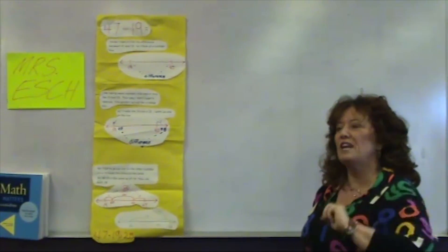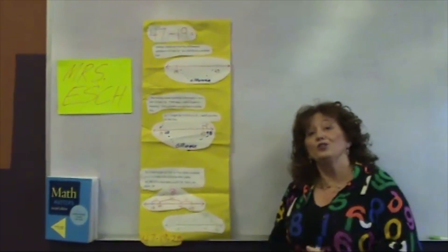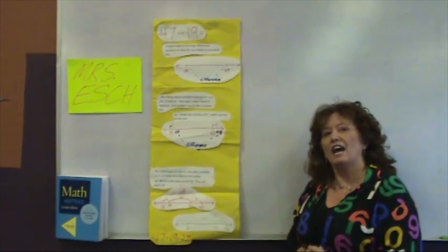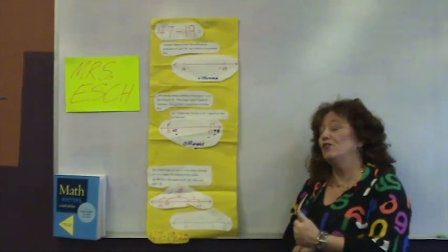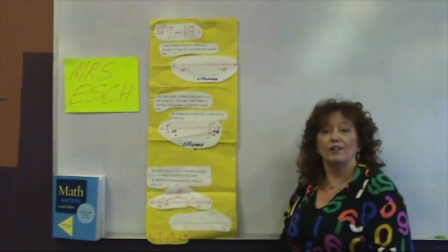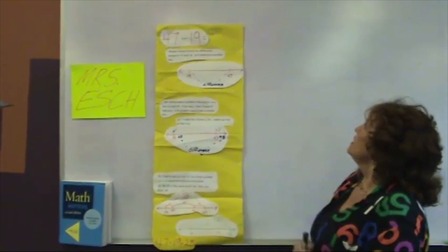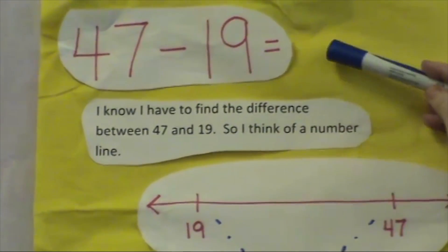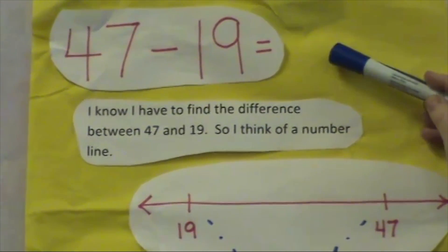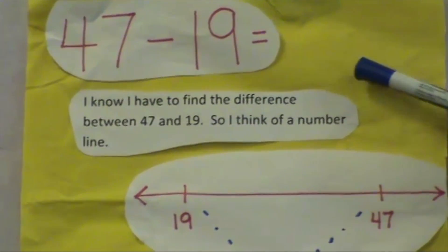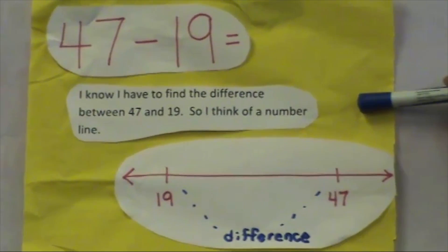Tip number 3. Sometimes when children have practiced a strategy a number of times, it would be nice to have them record it with you on a chart that could be hung in the room, as a reference point for other students. So, here you can see that this is one student's strategy for 47 takeaway 19. Or, another way to say that is, what is the difference between 47 and 19?